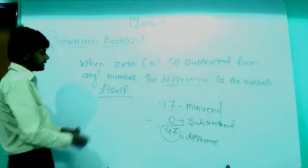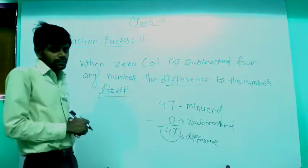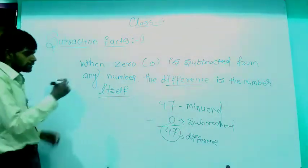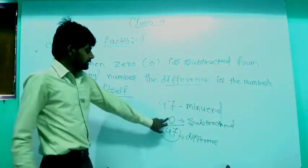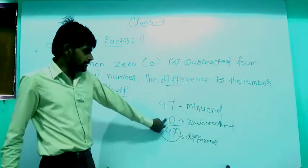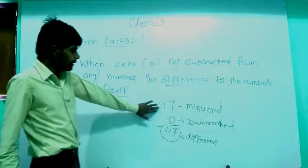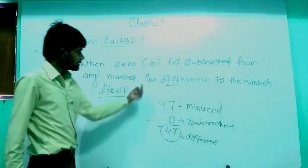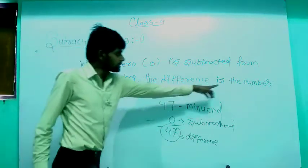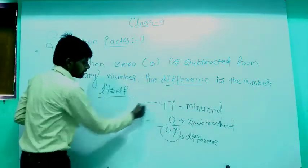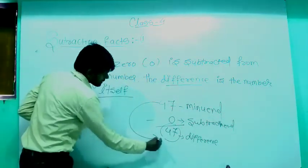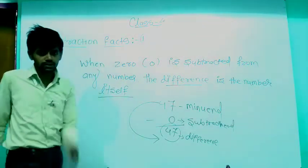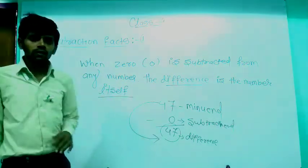So, when you subtract 0 from any number, the difference is the number itself — the same number comes back as the answer.